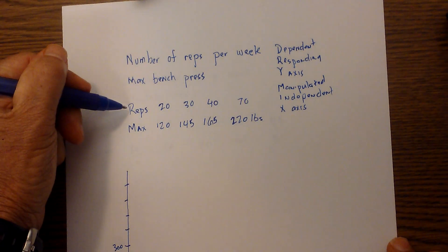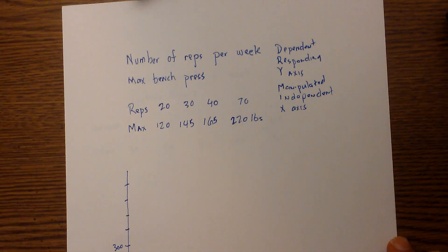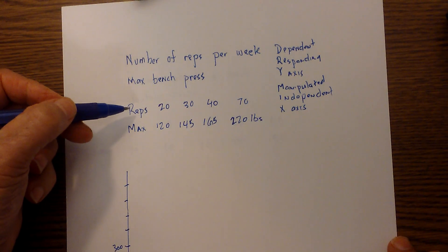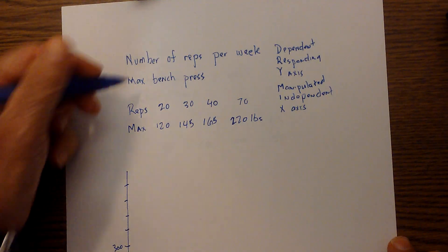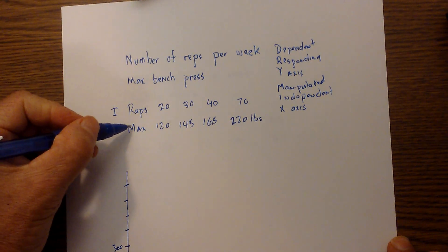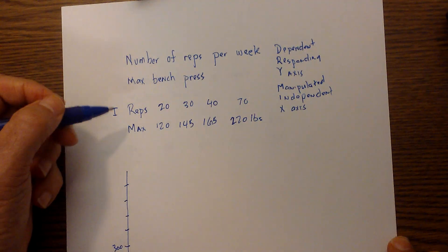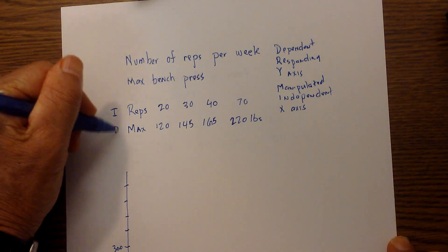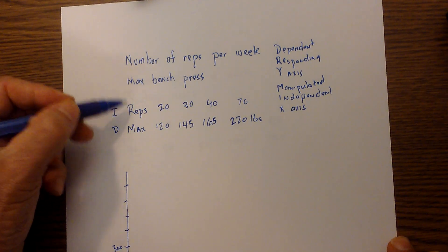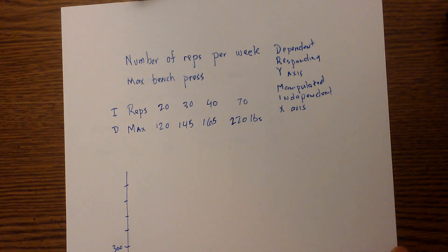The reps is what I'm manipulating. It's what I'm trying to see will make a difference, so the reps is the independent. The max would be the dependent because it depends on the number of reps you do each week.